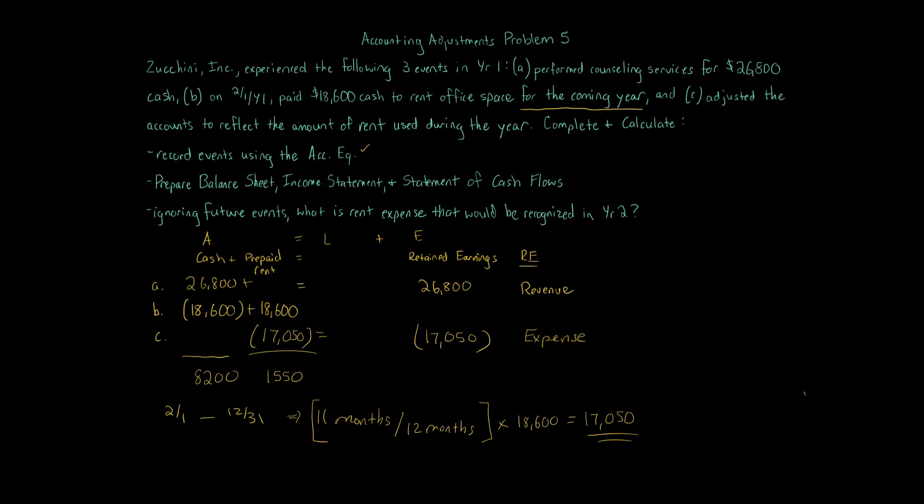Just January of year two, attributable just to that month. No liabilities. And then retain earnings, the balance is going to be $9,750. Does the left equal the right? Yes. If we add these two numbers, we get $9,750. $9,750 equals $9,750. Our equation balances.